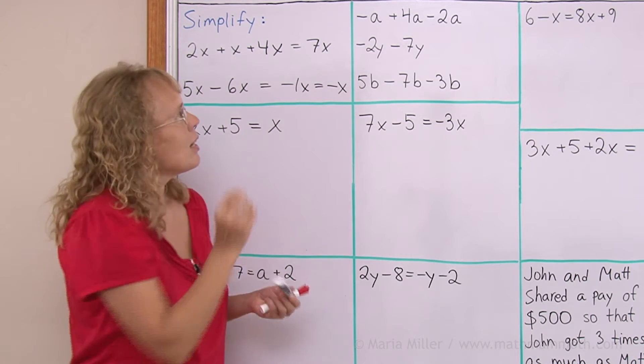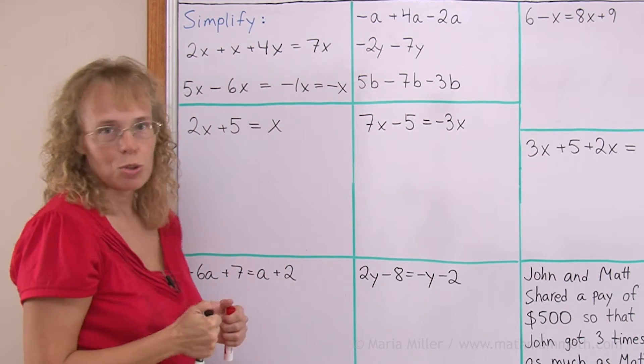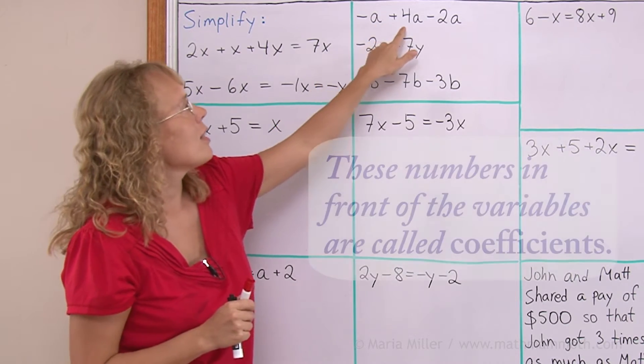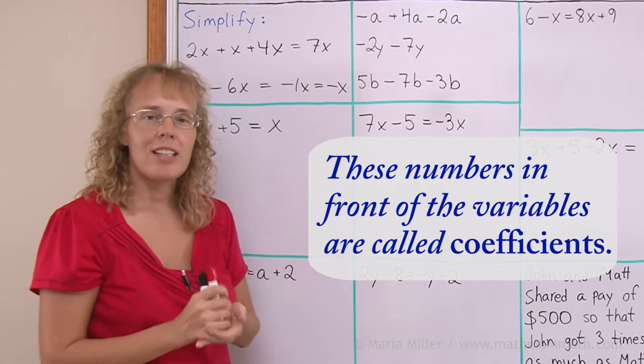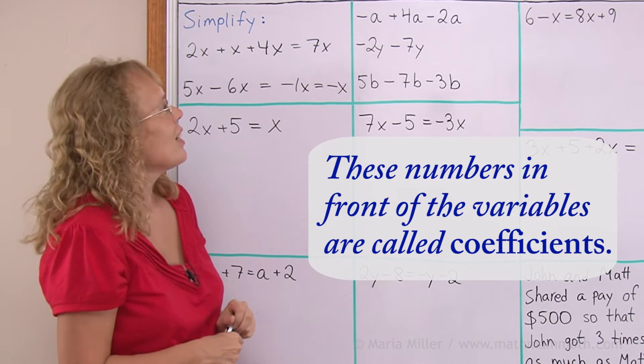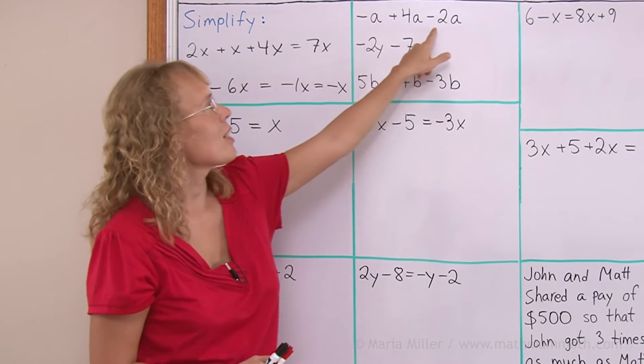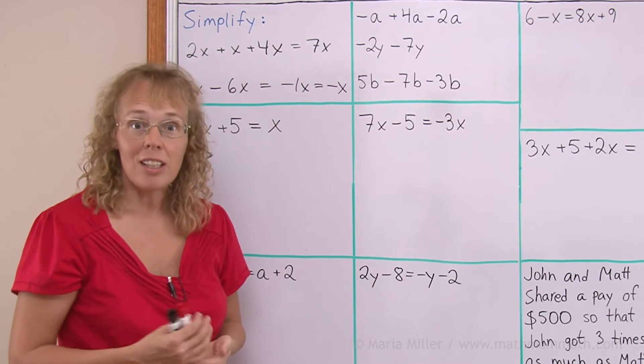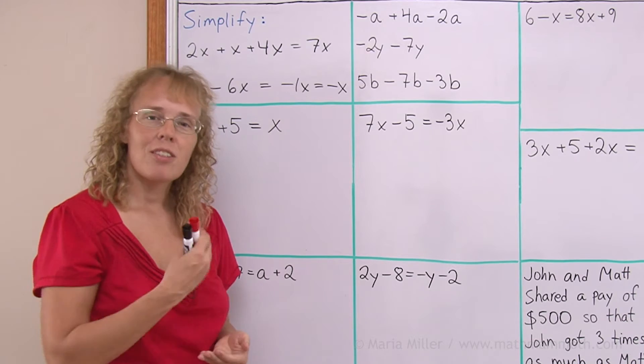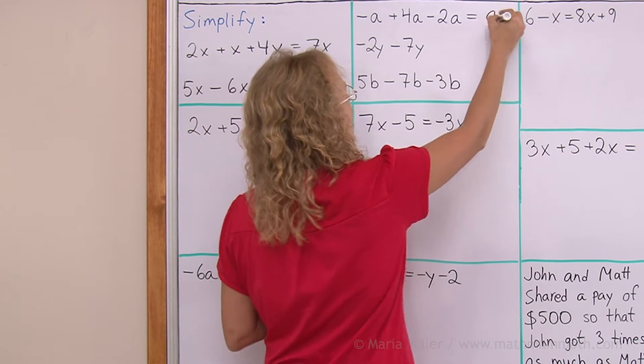Simplify. Here's negative a plus 4a minus 2a. Basically, just think of it here being negative 1 and then here 4 and negative 2. And then, in your mind, do the calculation negative 1 plus 4 minus 2. And then, tag a into the answer. We have negative 1 here and negative 2. So, we have, in total, 3 negatives and then plus 4. So, 4 positives, 3 negatives leaves us 1 positive. Just 1a or just simply a.